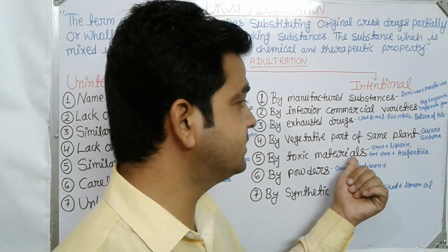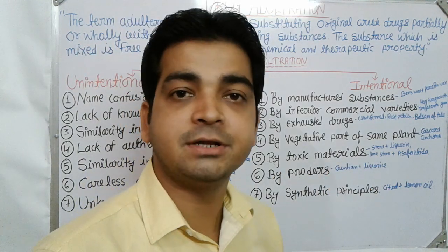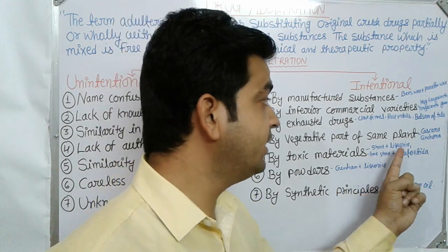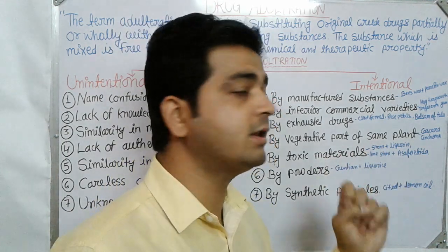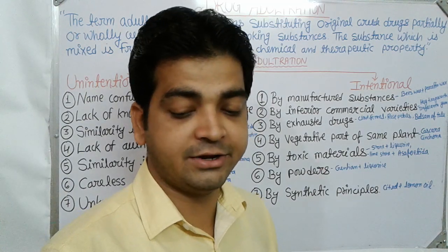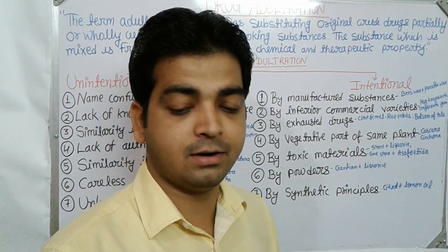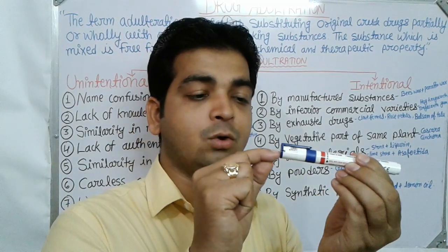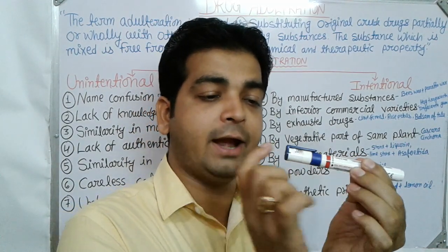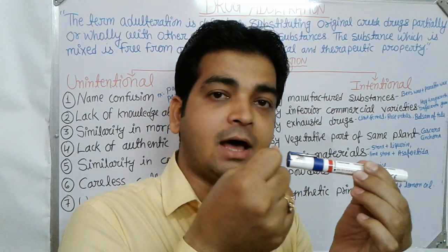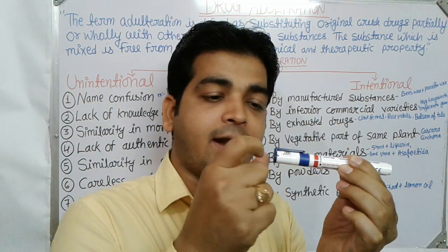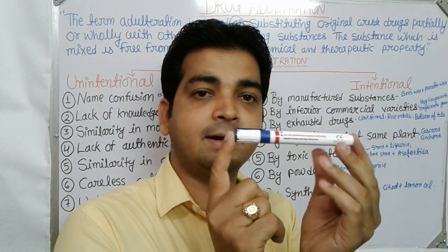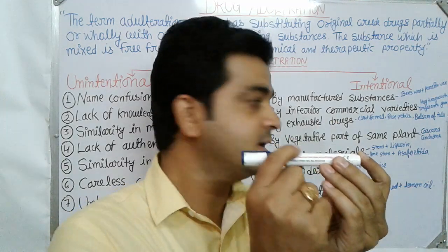The fifth type is adulteration by toxic materials. For example, in licorice root, which is generally cylindrical, a hole is made and stone pieces are inserted to increase the weight. But the inserted material is toxic. Similarly, in asafoetida, which is in crystal and irregular form, limestone pieces are mixed in, which is very toxic and harmful.